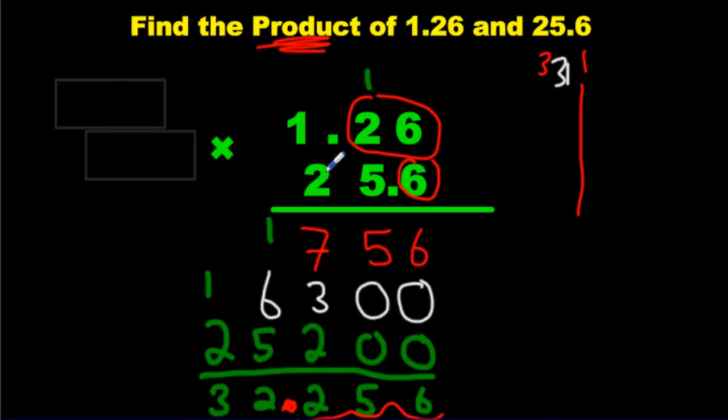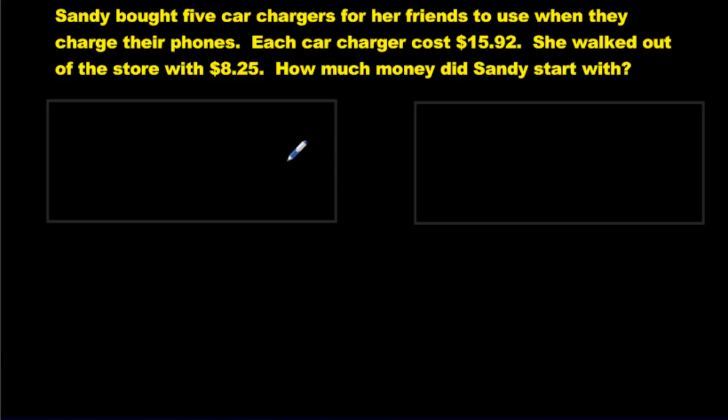By the way, 25.6 is about 25 times one point. 25 times one is about 25. 32 is pretty close to that. So we know our answer is reasonable. And the last question we have.